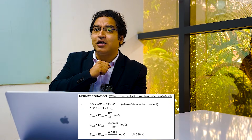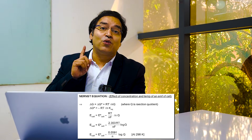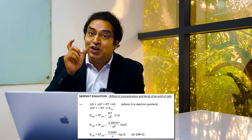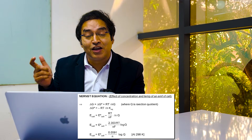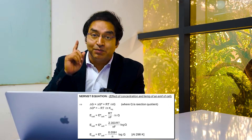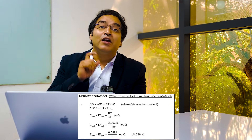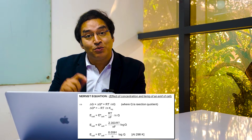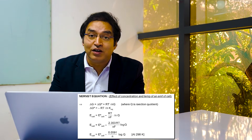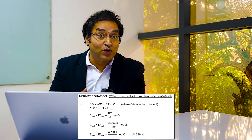How many of you remember the reaction quotient? This is the reaction quotient we talked about earlier. Q less than K: reaction moves forward. Q more than K: reaction goes backward. Q equal to K: reaction is at equilibrium — exactly as in chemical equilibrium.